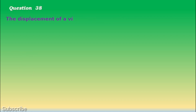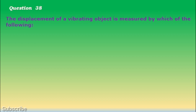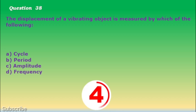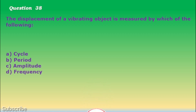Question number 38. The displacement of a vibrating object is measured by which of the following? a. Cycle, b. Period, c. Amplitude, d. Frequency. The correct answer is letter c. Amplitude.